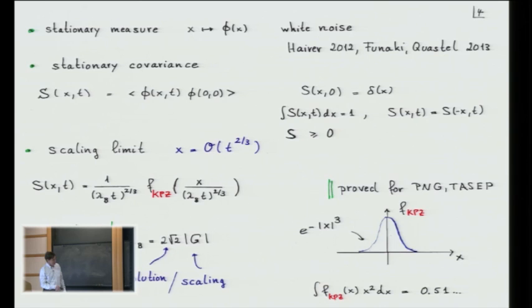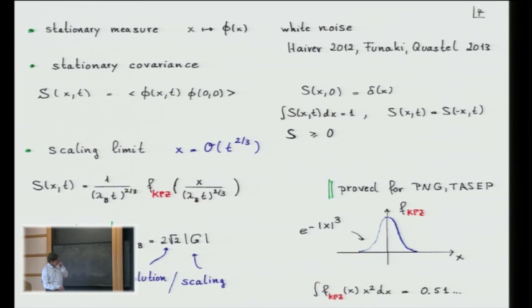This function f_KPZ — just to give you a feeling — it's an even function with rapid decay like e to the minus x cubed, so it looks something like a smooth peak. There's one point I want to emphasize: there's a non-universal factor lambda_B, which by scaling of the equation must be proportional to the coupling constant G.